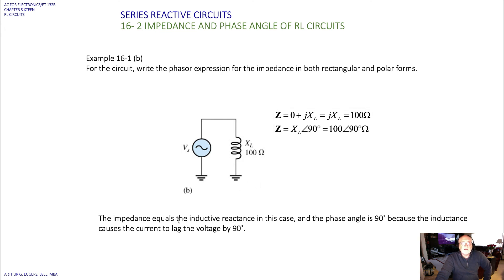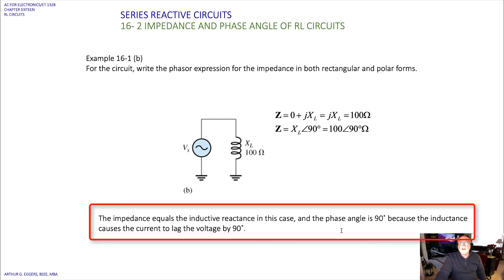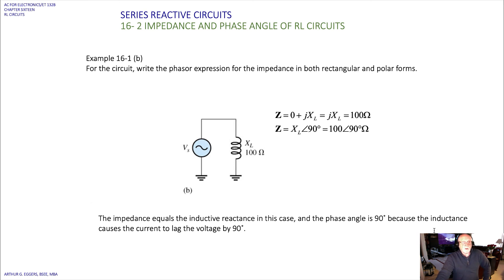The impedance equals the inductive reactance and the phase angle is 90 degrees, because the inductance causes the current to lag the voltage by 90 degrees. Some of you may remember the mnemonic ELI the ICEman: ELI — voltage E leads current I for inductors; ICE — current leads voltage for capacitors.